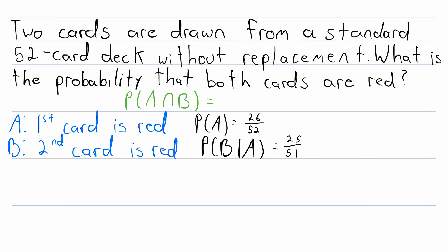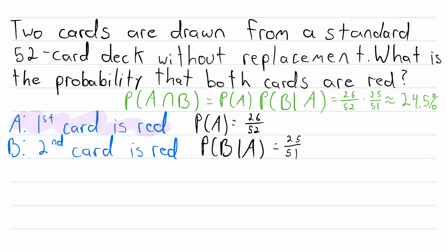Then the probability of A and B both occurring is just the probability of A multiplied by the probability of B given that A has occurred. So that is 26 over 52 multiplied by 25 over 51, which is approximately 24.5%. We can see how two events being dependent makes finding the probability of both of them occurring a little different than the previous example. This is because with dependent events, the occurrence of one affects the probability of the other.